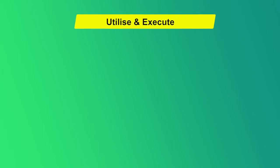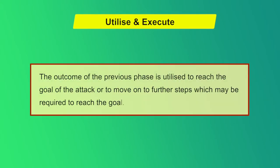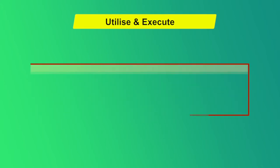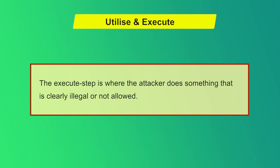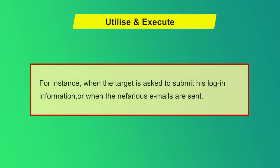The fourth step is Utilize and Execute. The outcome of the previous phase is utilized to reach the goal of the attack, or to move on to further steps required to reach that goal. The execute step is where the attacker does something that is clearly illegal or not allowed — for instance, when the target is asked to submit their login information, or when nefarious emails are sent.